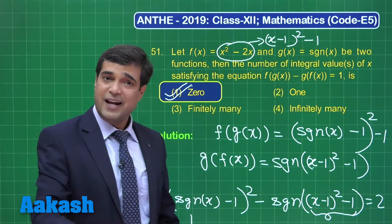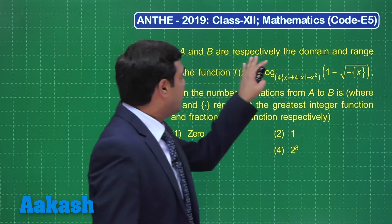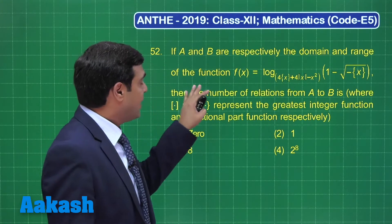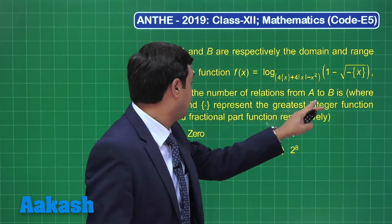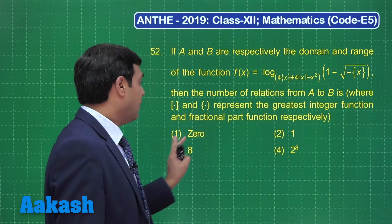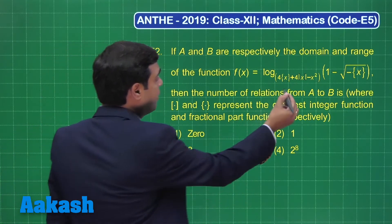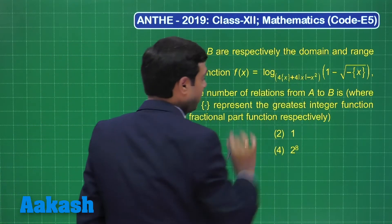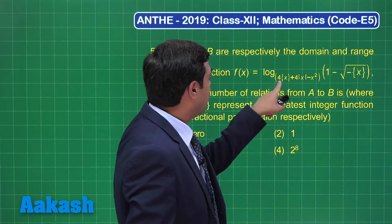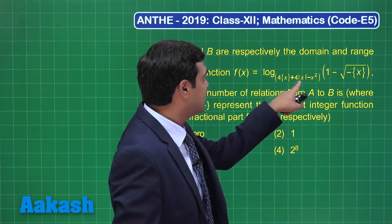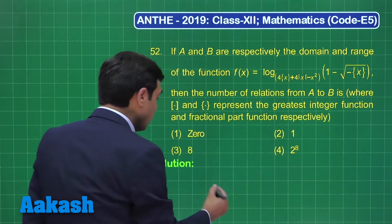Let's move on to the next question. If A and B are respectively the domain and range of this given function, then the number of relations from A to B is given by which of the following four options? Let's try this question. This is a good one. When you talk about this entire term, what is this written? Can we understand? Yes. Four times fractional part x plus greatest integer x, meaning simply 4x(4x - x²). So what is the requirement? 4x - x² is greater than zero but not equal to one.